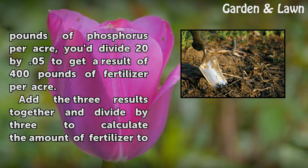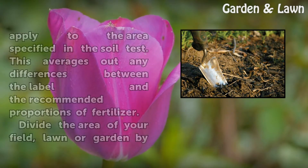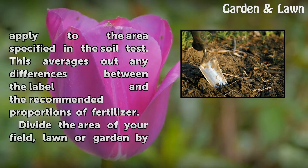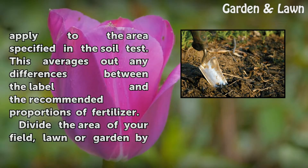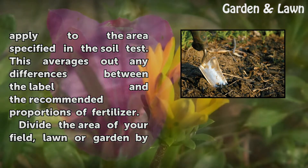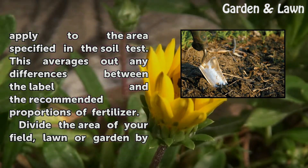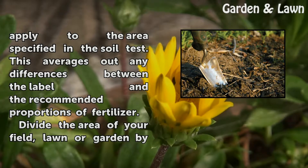Add the three results together and divide by 3 to calculate the amount of fertilizer to apply to the area specified in the soil test. This averages out any differences between the label and the recommended proportions of fertilizer.